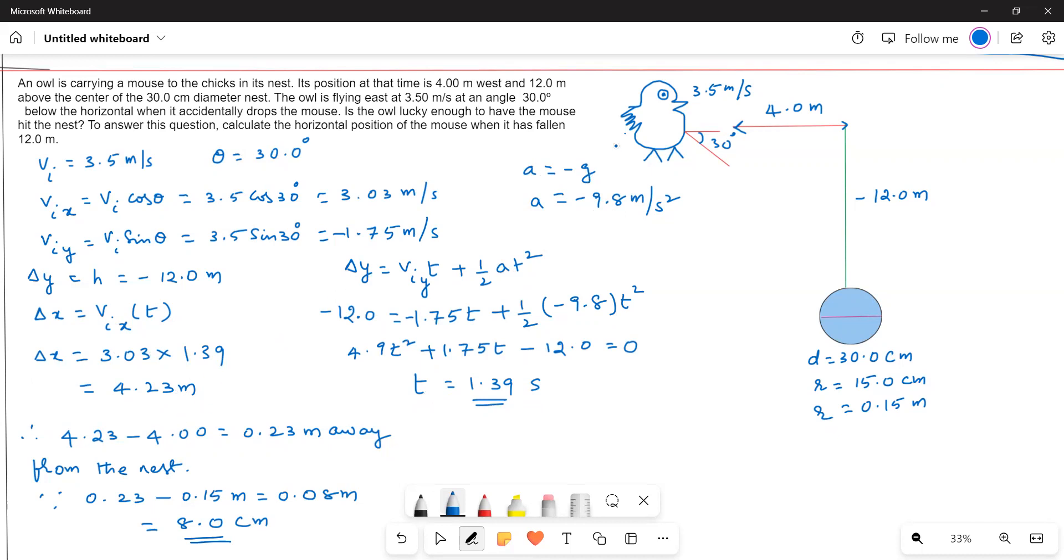The owl is 4 meters away from the nest and drops the mouse, which travels 4.23 meters horizontally. So this is 0.23 meters past the nest center.